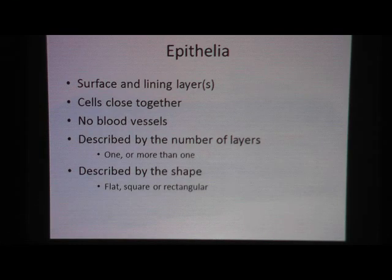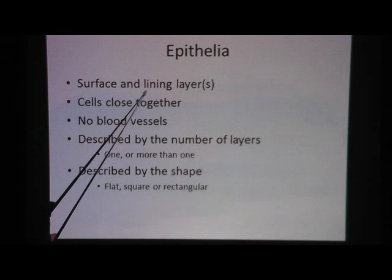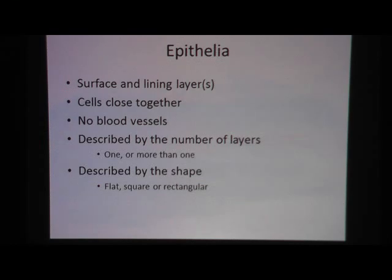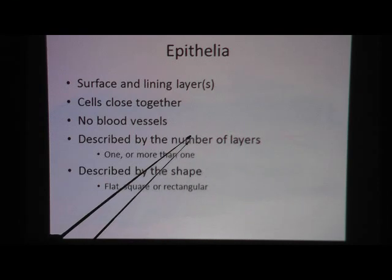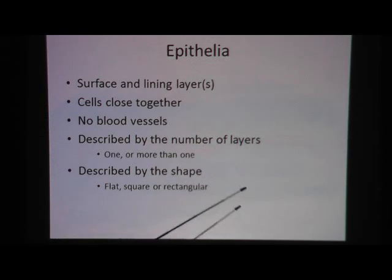So let's review what is epithelia. Epithelia, by definition, has to be on the surface and it's going to be lining something — it's a layer lining something. This layer of tissue is made of cells that are very close together. There are no holes or gaps in between them, and there are no blood vessels in epithelial tissue. We name epithelial tissue two ways: the first part of the name describes the number of layers of cells, and the second part describes the shape of the cells.